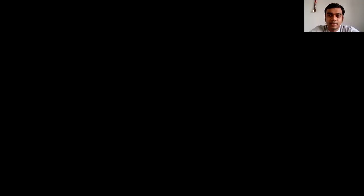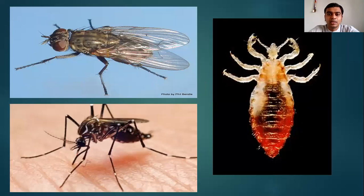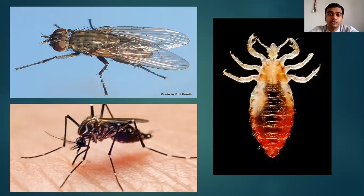Today we'll be talking about entomology. Entomology is a very important part as far as all communicable diseases are considered, since many of the communicable diseases are transmitted through the medium of insects. These three animals shown in the pictures — insects are also known as animals because they are part of kingdom Animalia — they all cause a lot of human diseases.